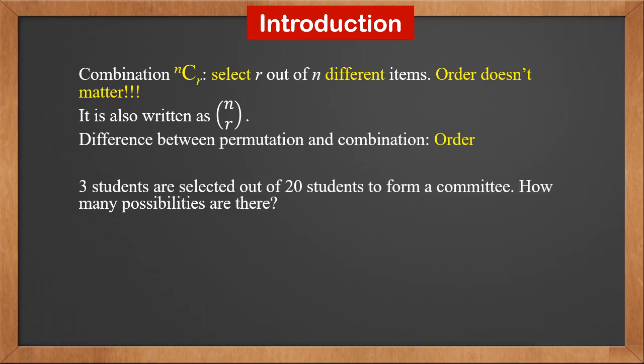Let's take a look at an example. 3 students are selected out of 20 students to form a committee. How many possibilities are there? The answer is 20C3. You just need to form a committee. The order of these three students doesn't matter.